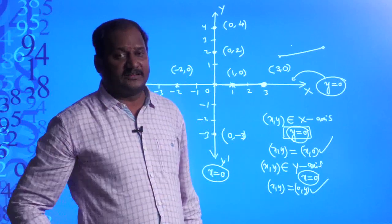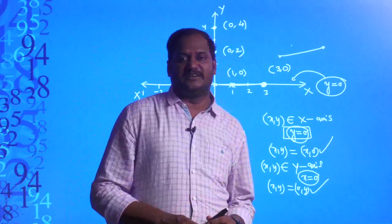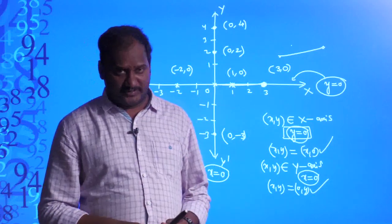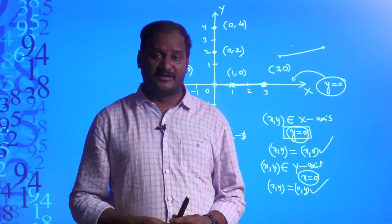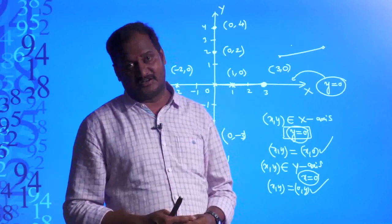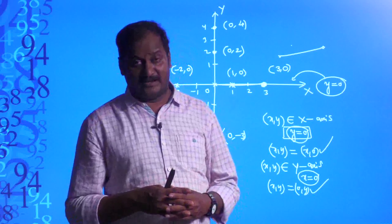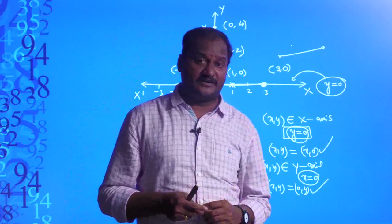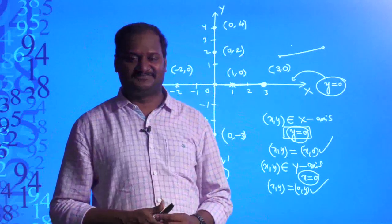So like this, we can locate points on the coordinate plane. In this grade 9 coordinate geometry lesson, we discussed how to locate a point, how to name the coordinates, what are the four quadrants divided by two axes, what is the intersection of any two quadrants, what is the sign convention for each quadrant, and what is the position of a point on the x-axis and y-axis. I hope you understand. Thank you.